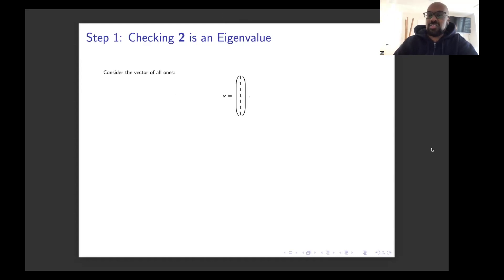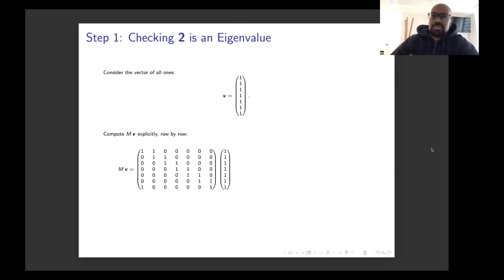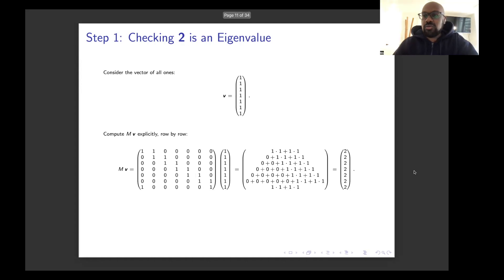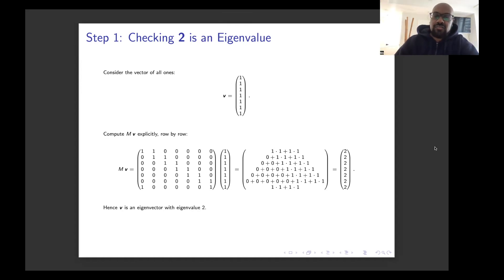So let's start with the fact that 2 is an eigenvalue. If we look at the vector that consists of all 1s and multiply M by it, if you multiply any matrix by the all-1s vector, the entries are going to be the sum of the rows of your given matrix. And if you notice in this matrix, all the rows add up to 2. We end up with a vector with all 2s, which is exactly twice the original vector. So the all-1s vector is an eigenvector with eigenvalue 2.